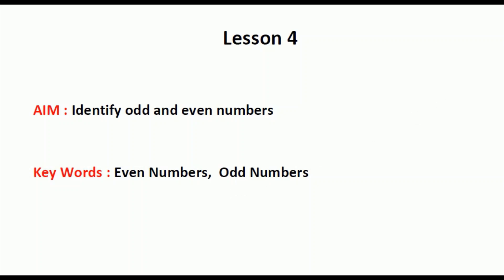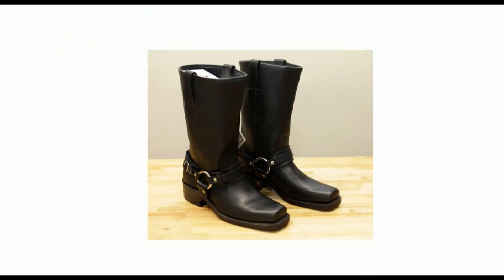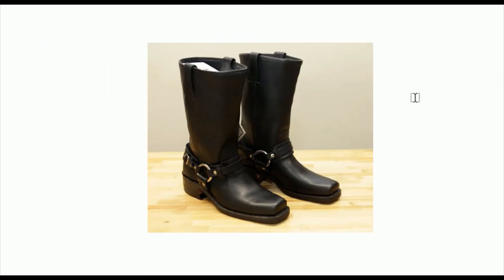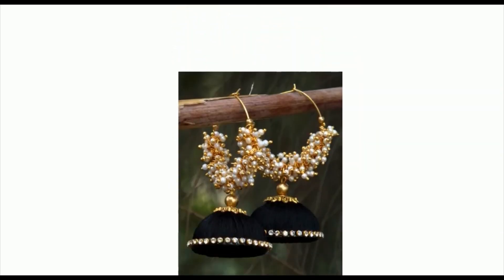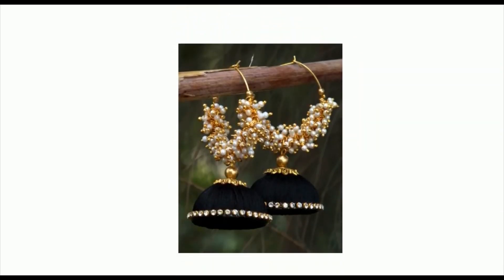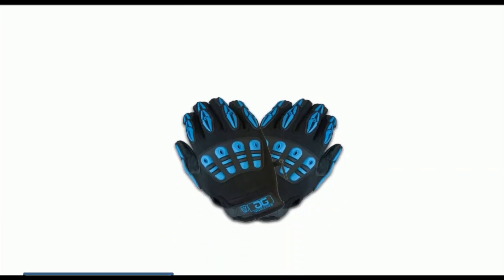Now children, tell me the things which we can buy as buyers from a shop. We can buy many things. Here I will show you a few things which we can buy as buyers. First, in this picture you can see a pair of shoes. Next comes a pair of socks, then a pair of earrings, and a pair of blouse.